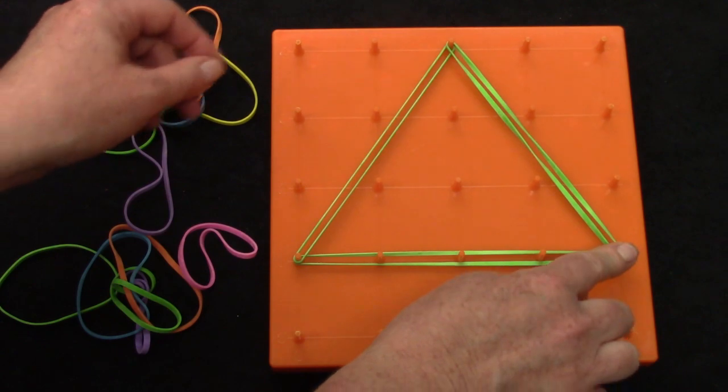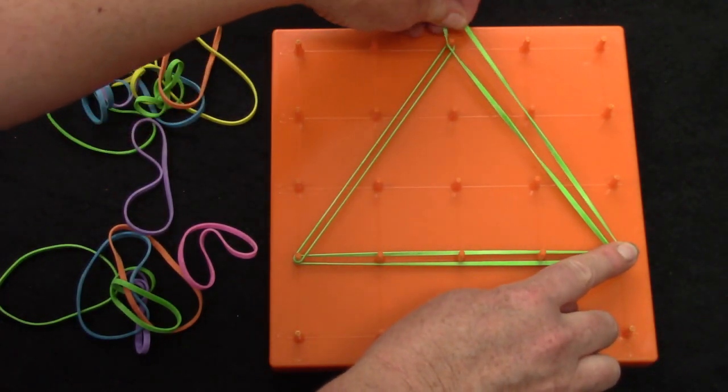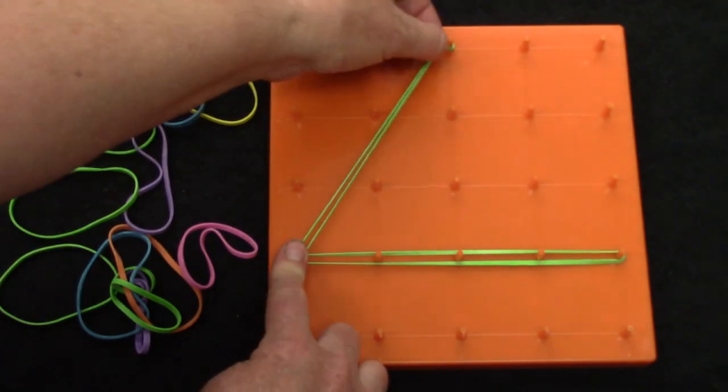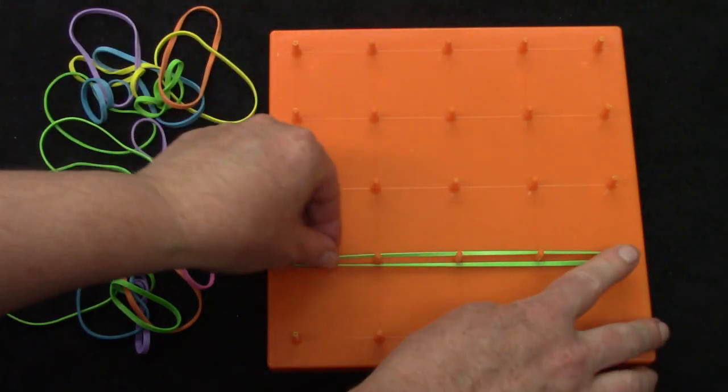When we're taking bands off of our geoboard we're going to hold one side as we take off the other so that it doesn't fling away.